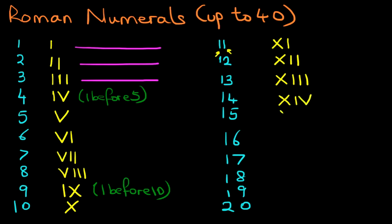15, where we do the 10 first and then we do the 5. 16, we do the 10 first. That's the X. And how do we do 6? It is V, I. 17 is X, V, I, I. 18 is X, V, I, I, I.